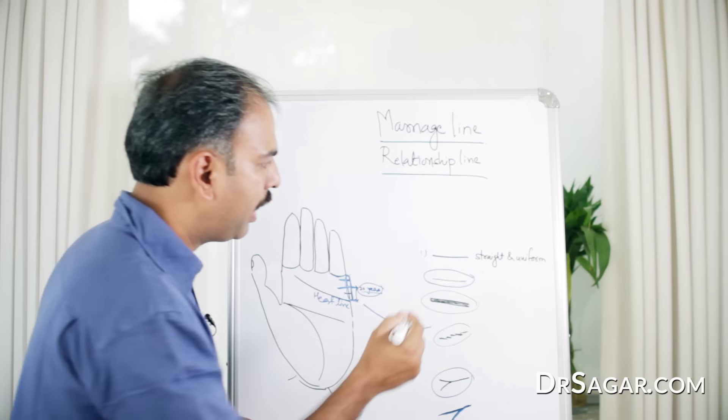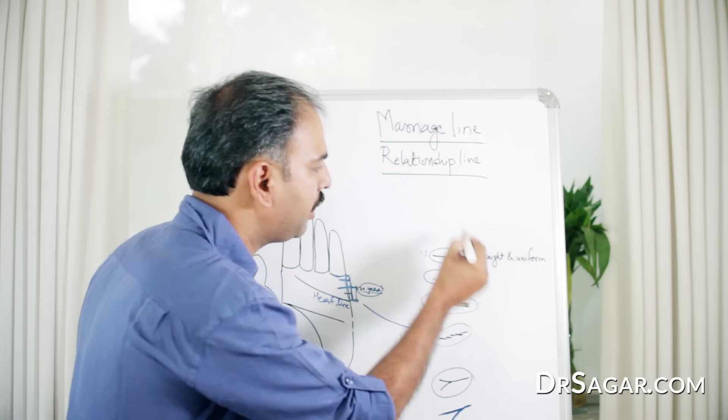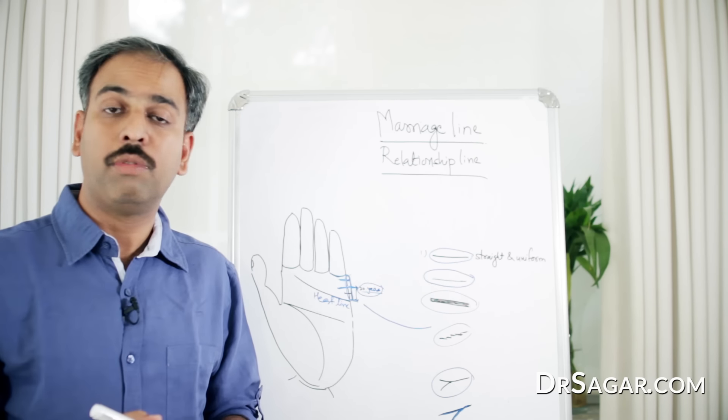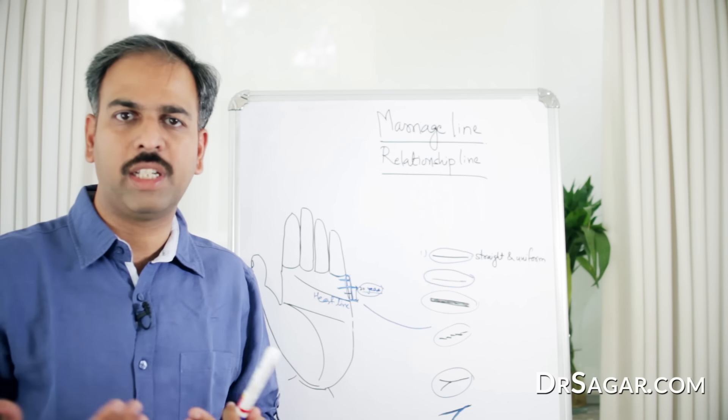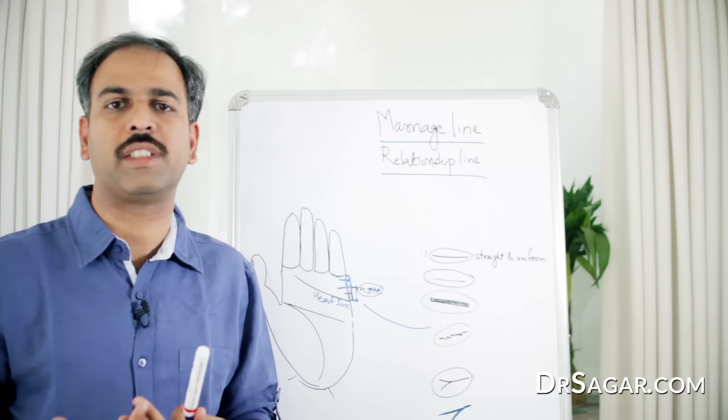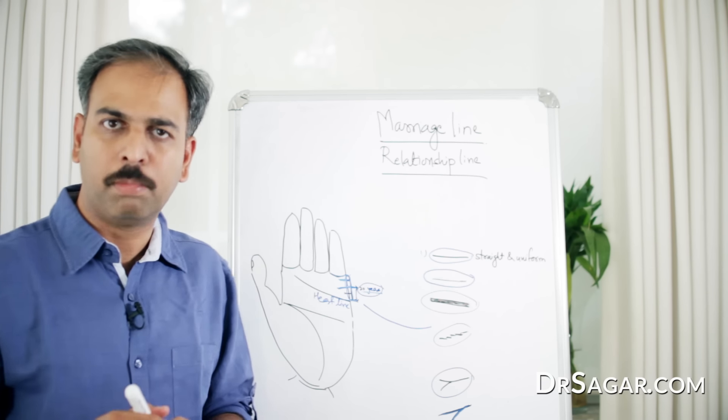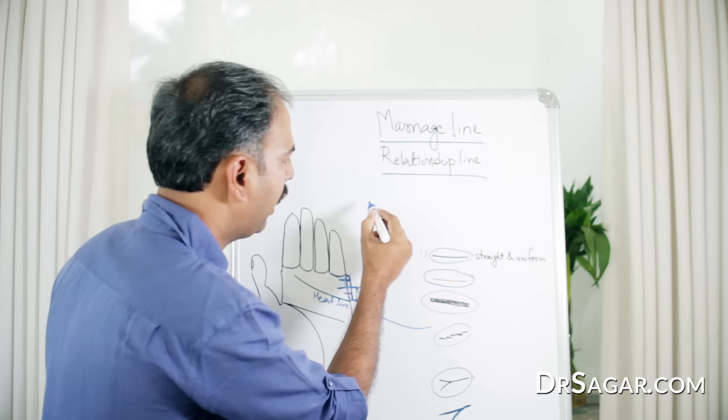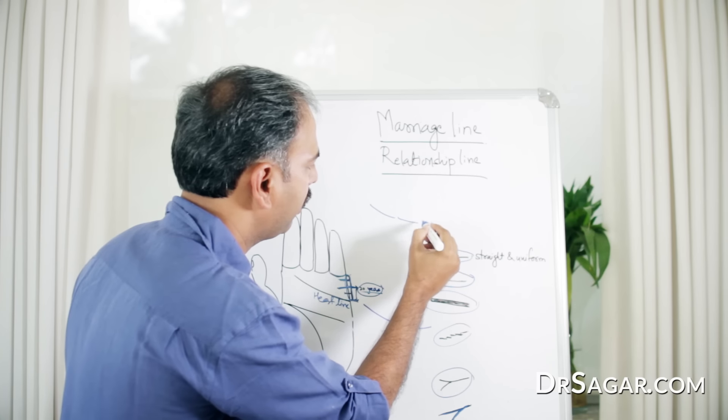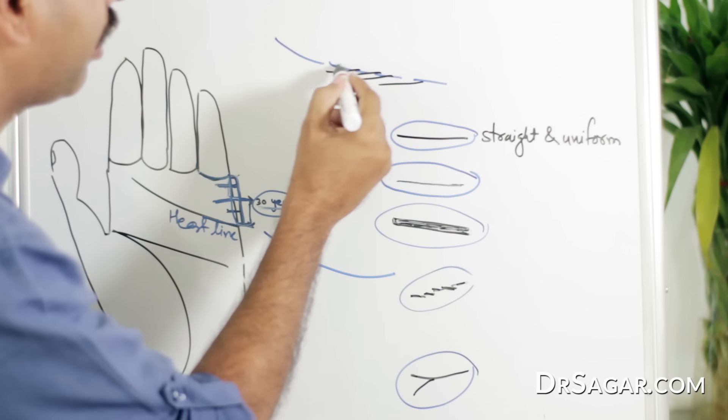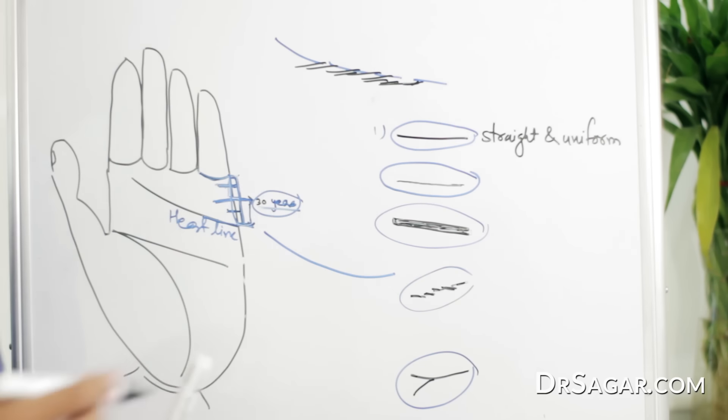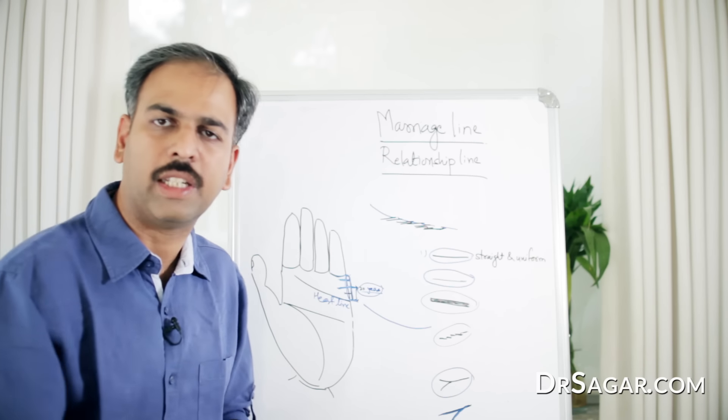In the second example, a client who has a very straight and uniform marriage line, which means that his partner is very strong in his relationship, he is very serious about their relationship, but the person himself has a very broken heart line, or you can say there is a lot of breaks or defects in his heart line.